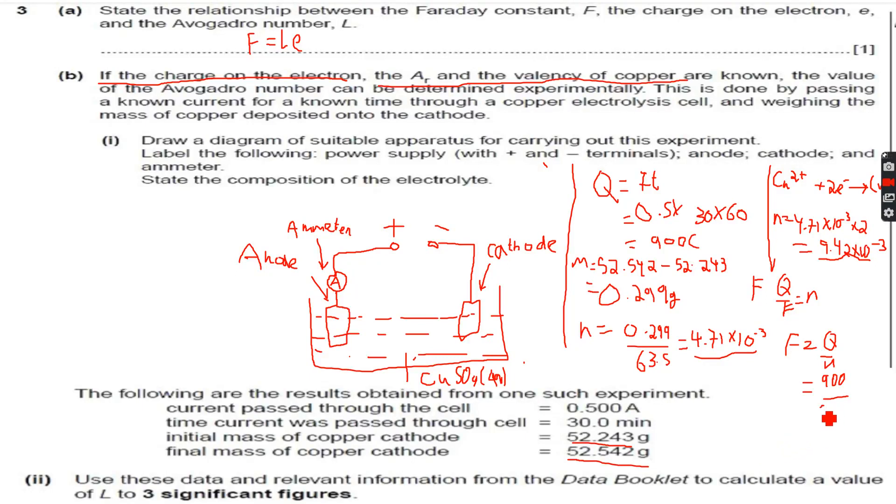Dividing 9.42 into 10 to the power of minus 3, I get 95569. Let's take this calculator value, 95569. Obviously this is rounded off, it's a very large decimal value.